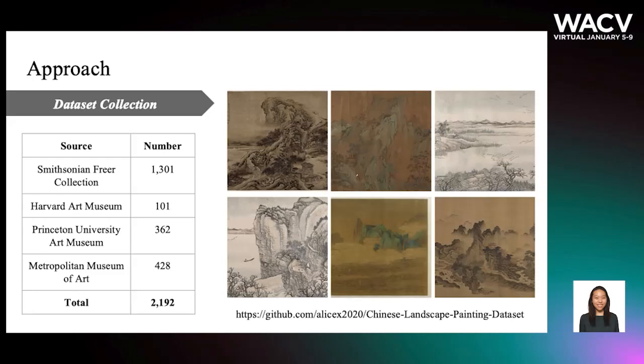Here's our approach. We first collect a new dataset of traditional Chinese landscape paintings collected from online museum galleries, such as the Smithsonian, Harvard, Princeton, and Metropolitan Museums of Art. This dataset is currently available for public use at the GitHub link shown here.